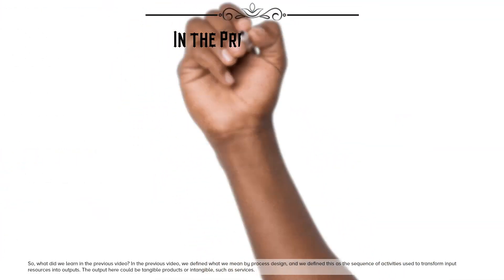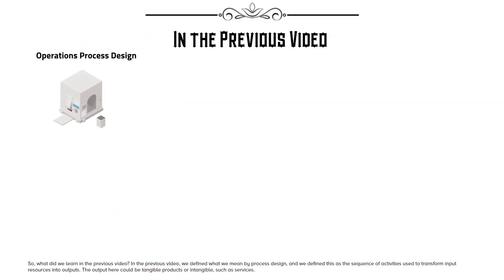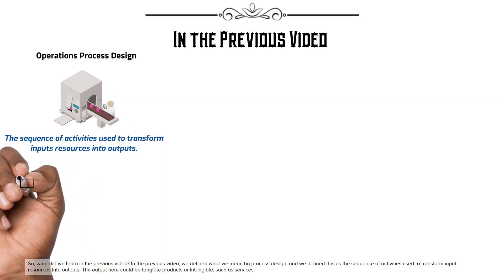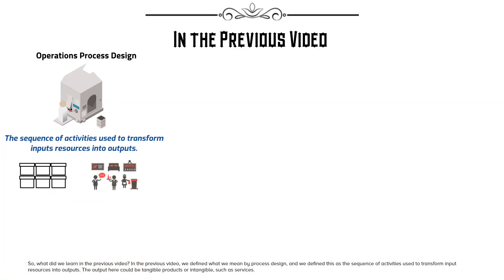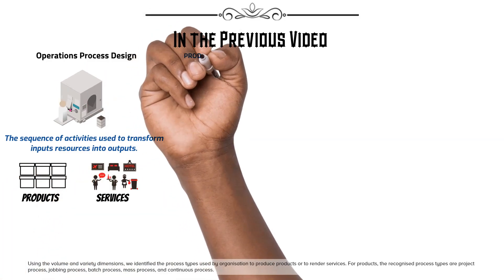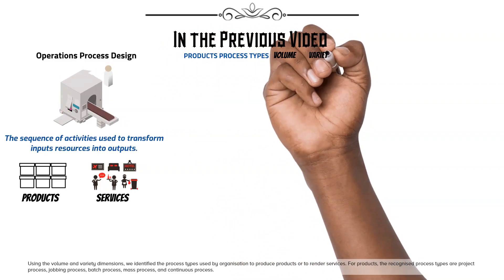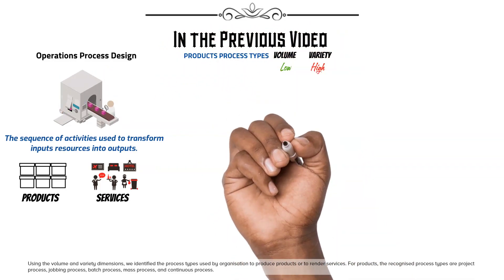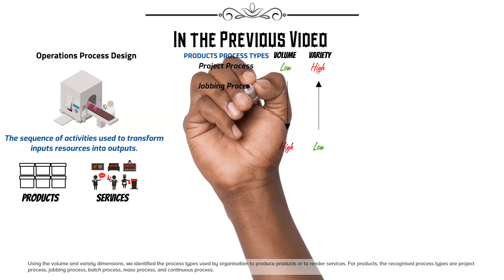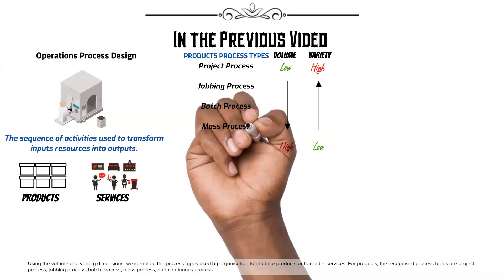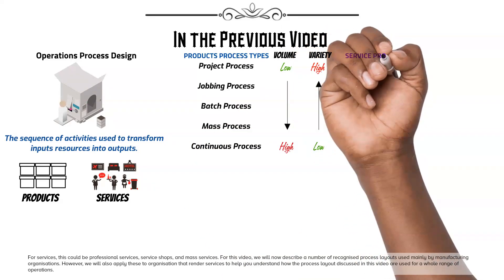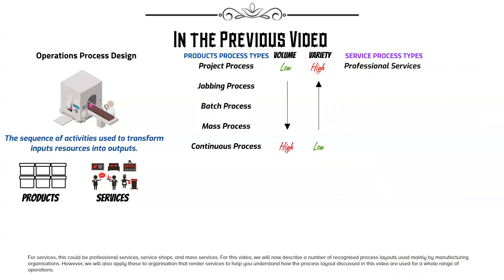In the previous video, we defined what we mean by process design, and we defined this as the sequence of activities used to transform input resources into outputs. The output here could be tangible products or intangible, such as services. Using the volume and variety dimensions, we identified the process types used by organizations to produce products or to render services. For products, the recognized process types are project process, jobbing process, batch process, mass process, and continuous process. For services, this could be professional services, service shops, and mass services.